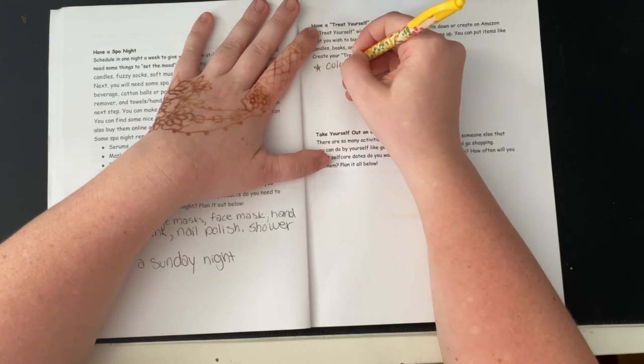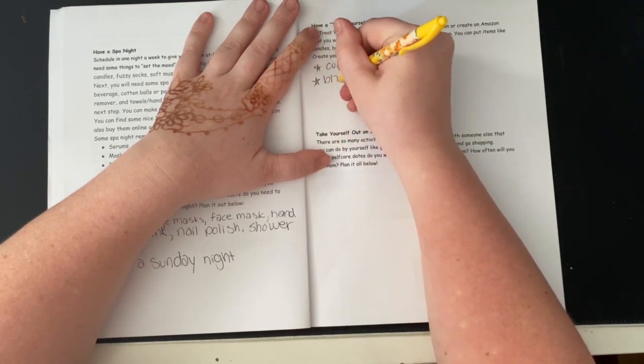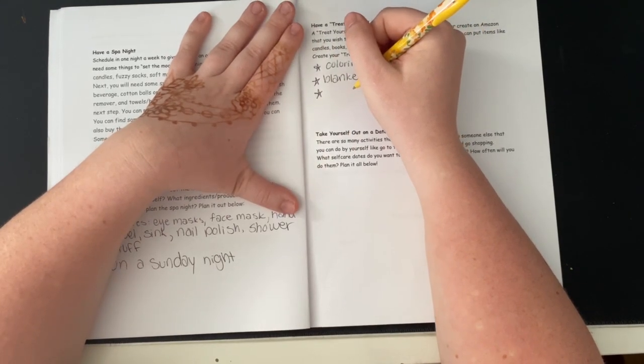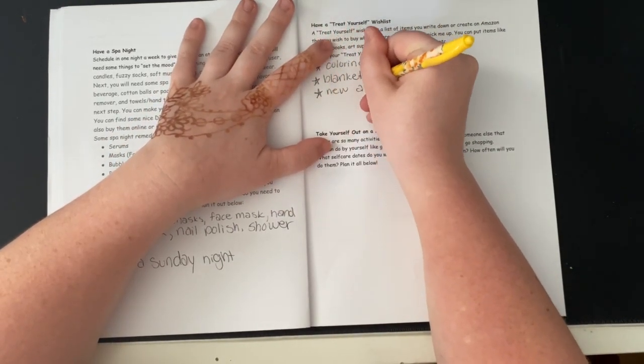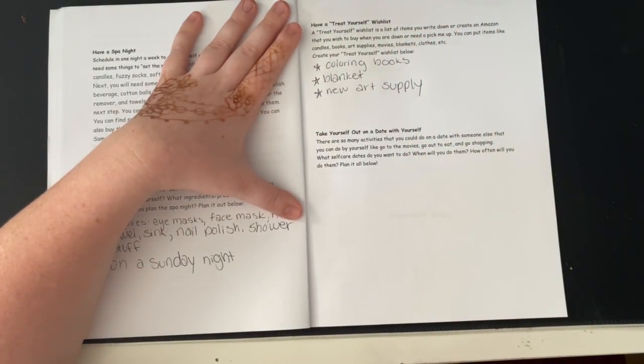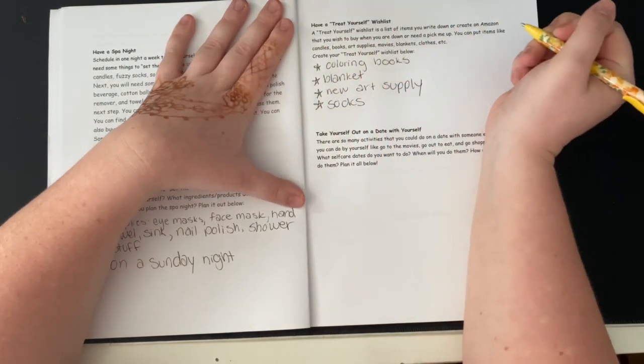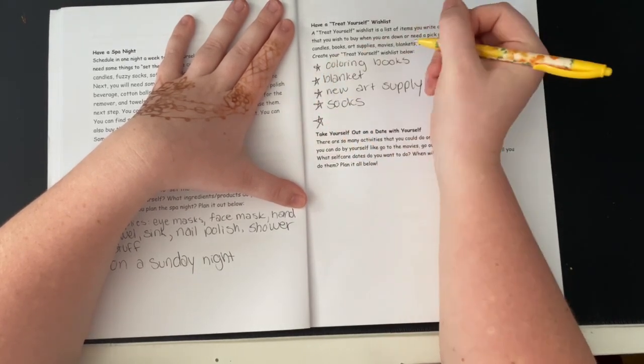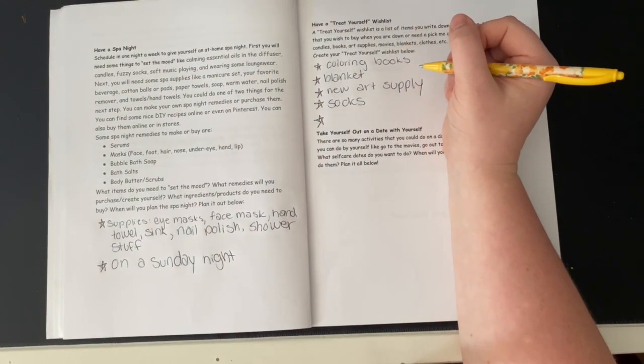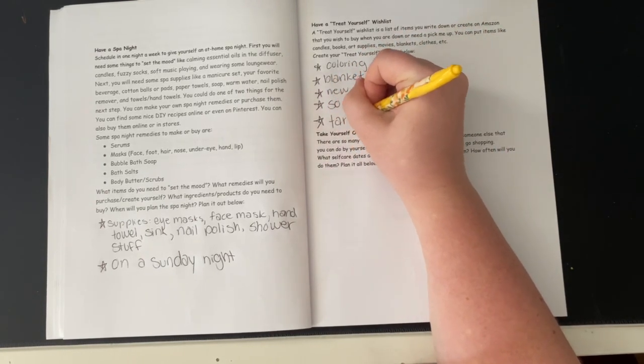For me would be a coloring book, a new blanket, probably a new art supply. I also like to get socks. I know that's random, but getting new socks is always nice. And the last thing would probably be, if I were to treat myself to something, it might be a new tarot or oracle deck.